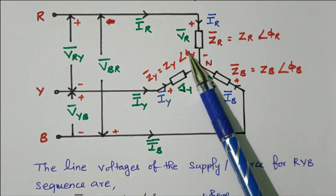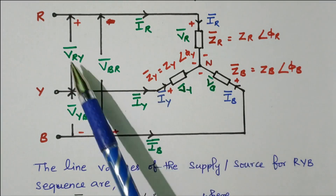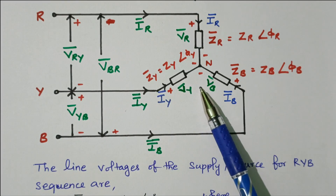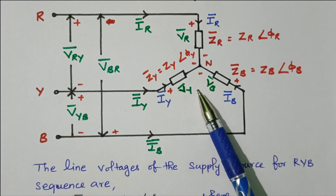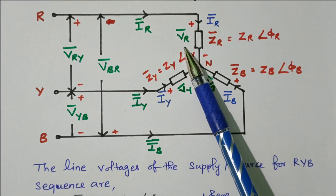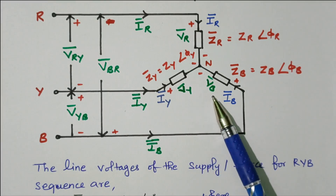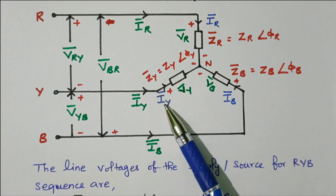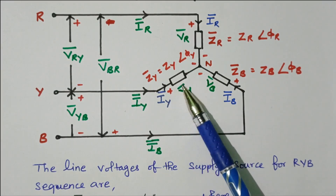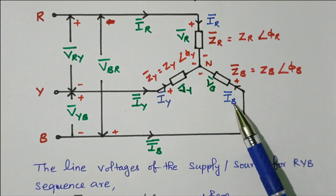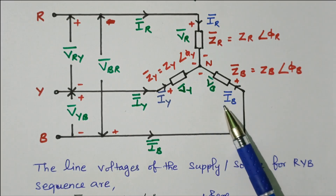Inside the load side we have the phase voltage and phase current. On the line side we have line voltage and line current. Once you enter into the load end: VR is the phase voltage across R-phase, VY is the phase voltage across Y-phase, VB is the phase voltage across B-phase. Similarly, IY is the current flowing through Y-phase, IR is the current flowing through R-phase, and IB is the current flowing through B-phase.